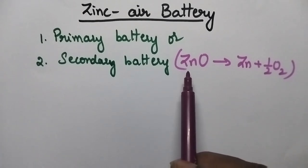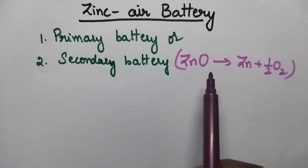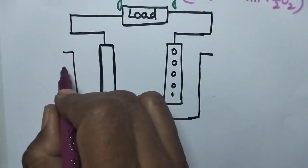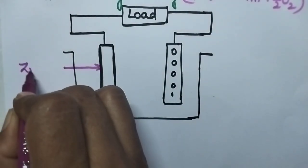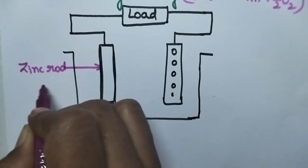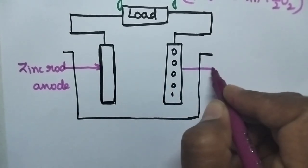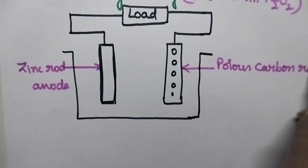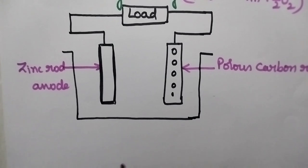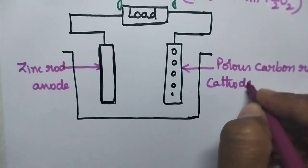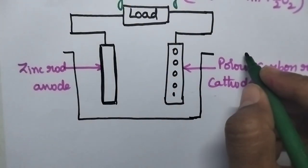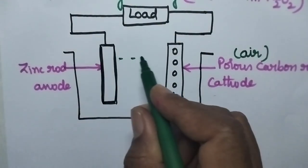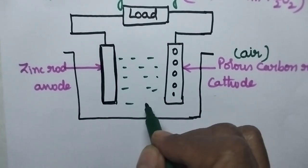Whenever the product formed, zinc oxide, can be decomposed back into zinc, it will act as a secondary battery. Zinc-air battery consists of zinc rod as anode and porous carbon rod. Porous carbon rod can act as cathode through which air can be passed. KOH acts as an electrolyte.